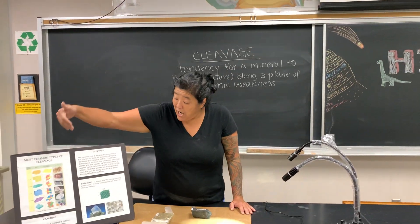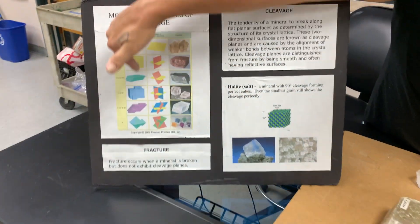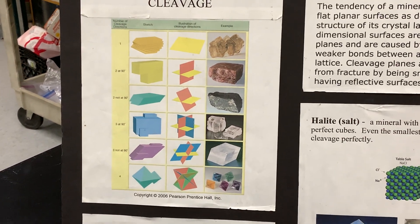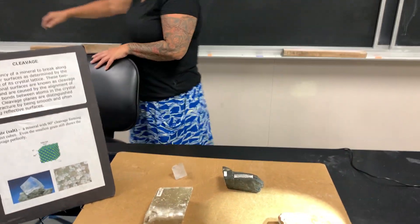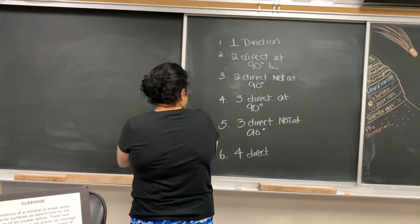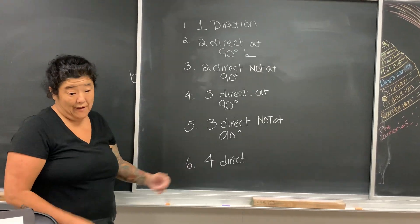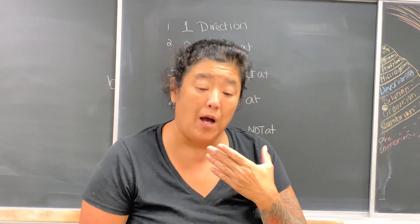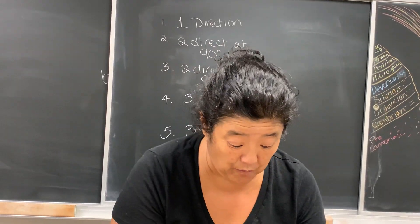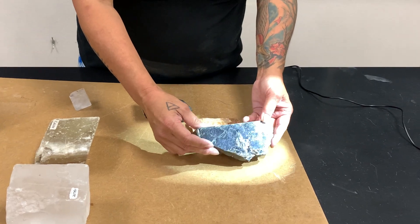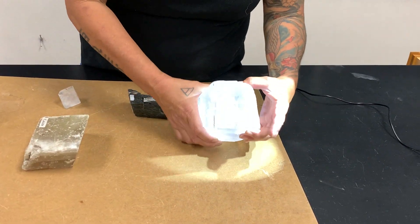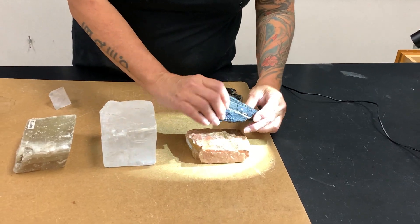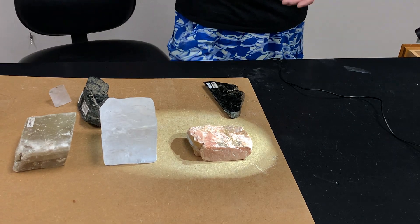I have an artboard here that shows the different types, and that will be available as a reference sheet on your Canvas page. Before we begin, I want you to understand that where a rock or mineral has had cleavage, light will bounce off and reflect from it. You can see the actual light bounce back — it's in the geometric shape that we'll use to identify these cleavage planes.